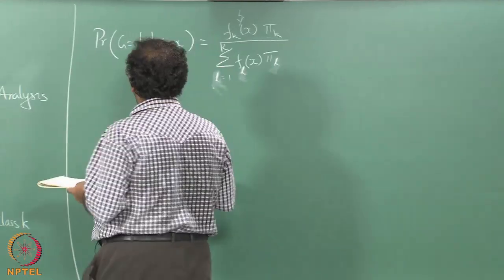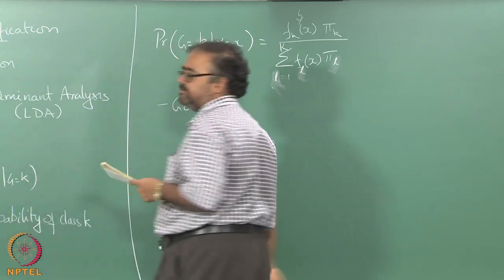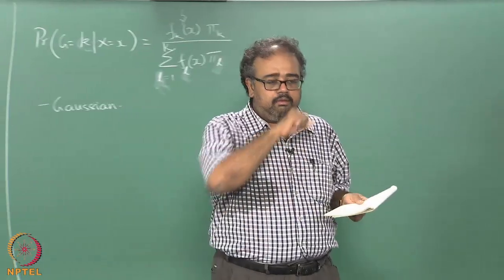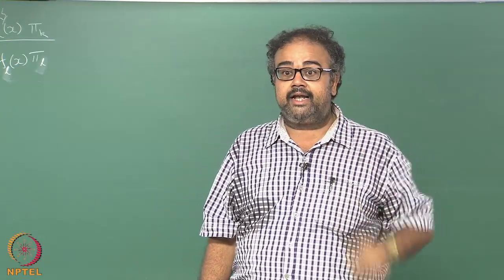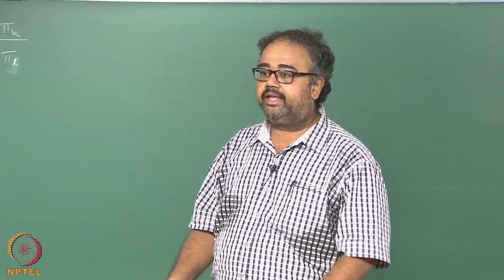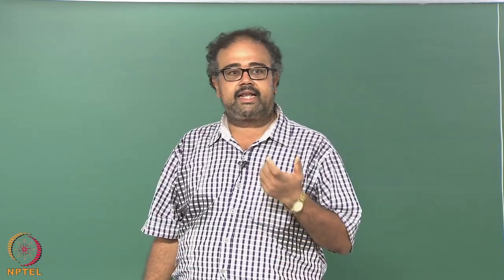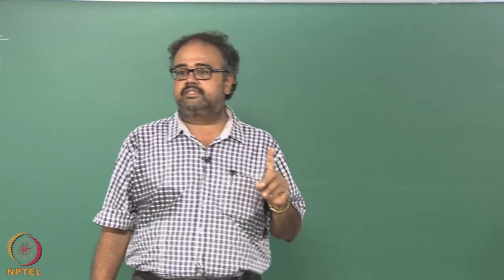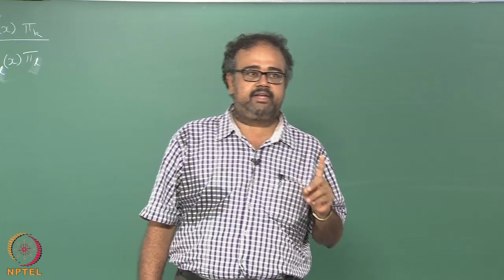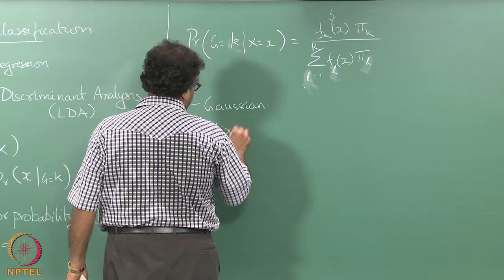Some of the most popular assumptions about fk are that fk is Gaussian. Both LDA and a related method called QDA - quadratic discriminant analysis - both of them assume that the class condition density fk is given by a single multivariate Gaussian. You could also assume that the class condition densities come from mixtures.